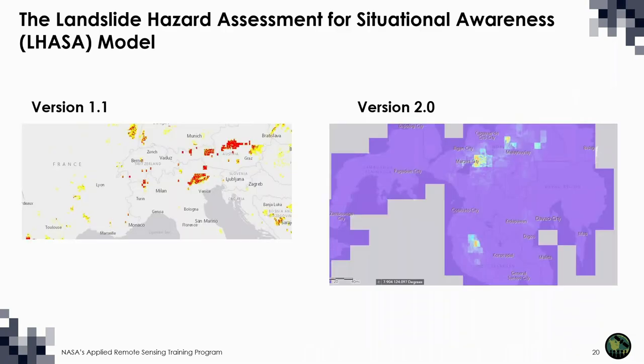You may have wondered how we know where landslides are probable. The answer is that we use the Landslide Hazard Assessment for Situational Awareness Model, or LASA for short. LASA 2.0 is the latest version available, but I'm going to start by describing LASA 1.1 because it's significantly simpler.